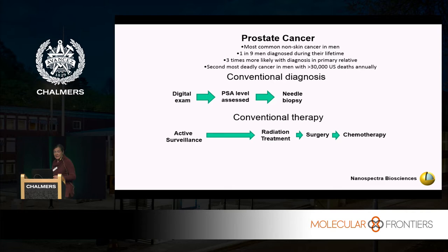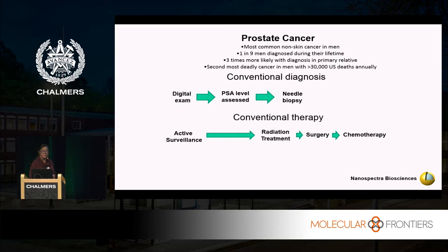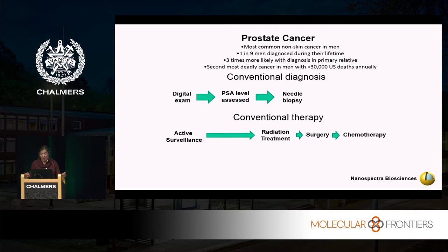Let me tell you a little bit about prostate cancer. It is the second most common cancer relative to skin cancer and also the second most deadly cancer relative to lung cancer. The prostate gland is only in men; it surrounds the urethra. It is very common — one in nine men will be diagnosed during their lifetime. If you are a young man and you have a primary relative like your father who's been diagnosed with prostate cancer, your chance of also experiencing prostate cancer rises to one in three. So it's something everyone needs to be very aware of.